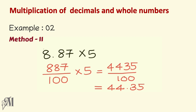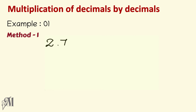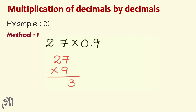You can follow either of these two methods to simplify multiplication of a whole number by a decimal. Now let's move on to multiplication of decimal numbers by a decimal number. Here too you can follow two methods. The first example is 2.7 multiplied by 0.9. In the first method, we neglect the decimal points, giving 27 multiplied by 9, which equals 243.